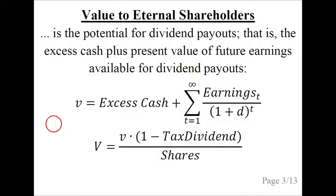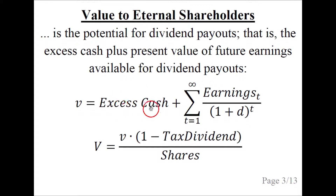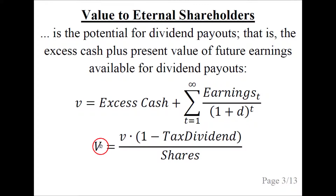I will assume that you have already watched the first talk in this series, so I'll just briefly recap what the value to eternal shareholders is. It is the potential for dividend payouts, which is the excess cash that could be paid out as dividends now, plus the present value of future earnings that can be paid out as dividends in the future. We denote it by a small v, and the capital V is the per share value after dividend tax.